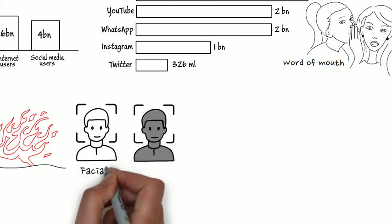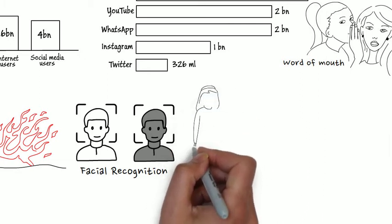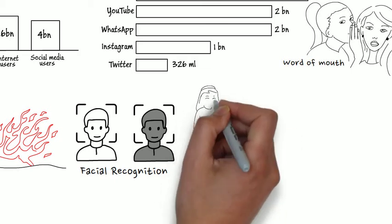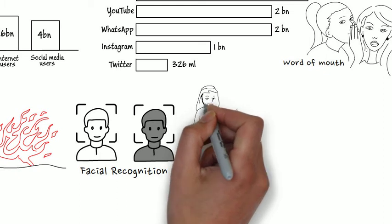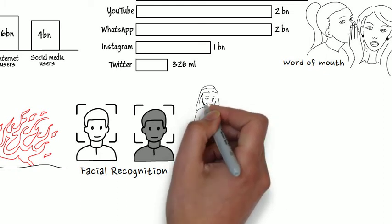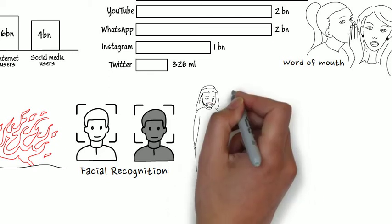An example is that social media facial recognition algorithms do not work well on people with dark complexions, and the reason is that this group were underrepresented in the machine learning stages of the algorithm's development. Our perception doesn't always match reality. Here are some examples from surveys. People in Saudi Arabia were asked what proportion of the population do you think is obese?